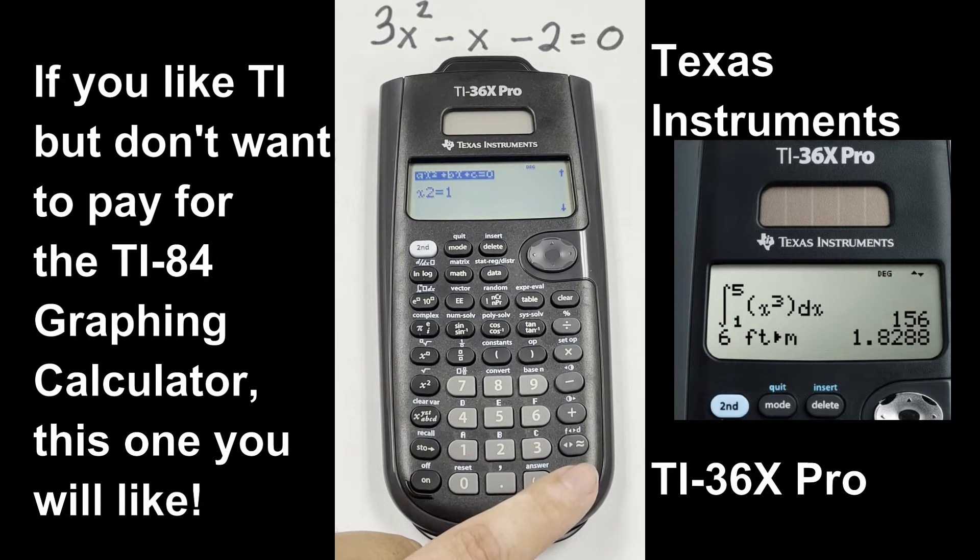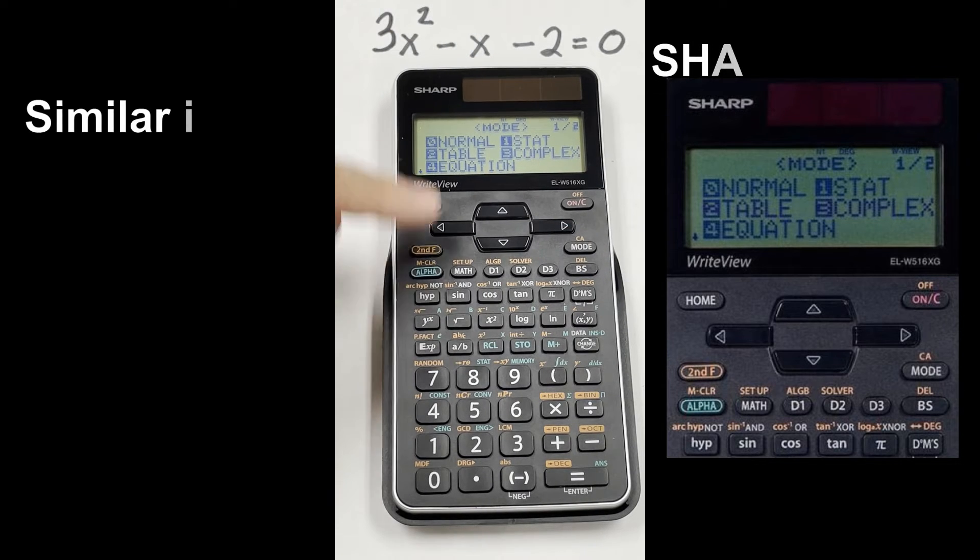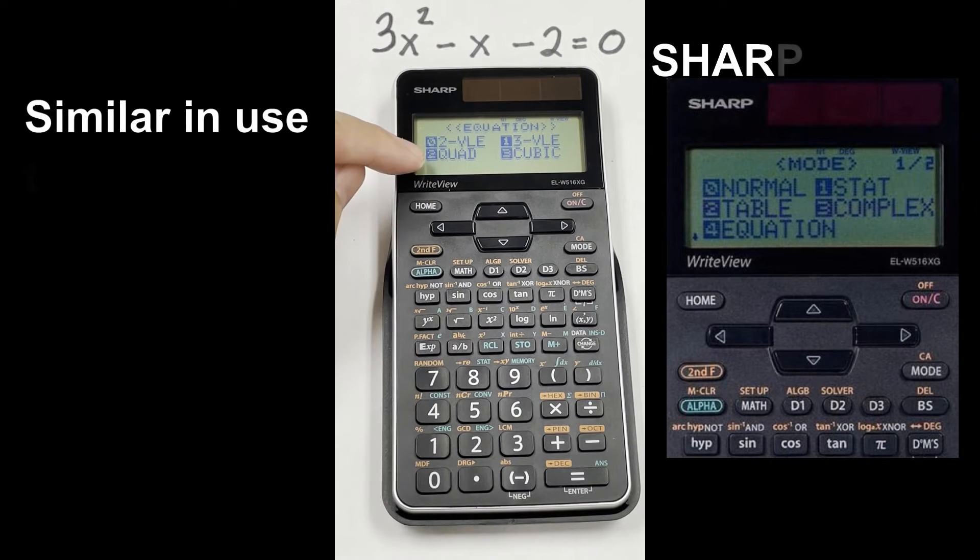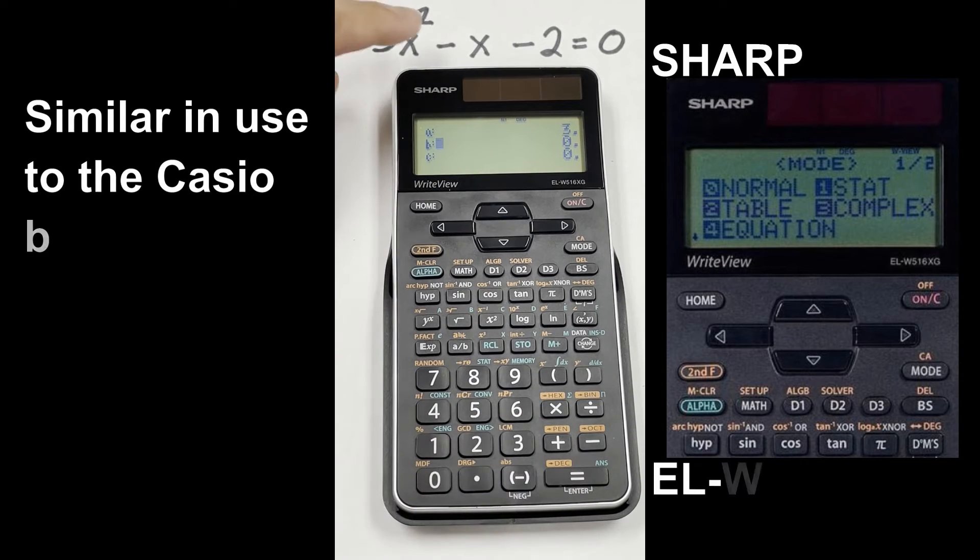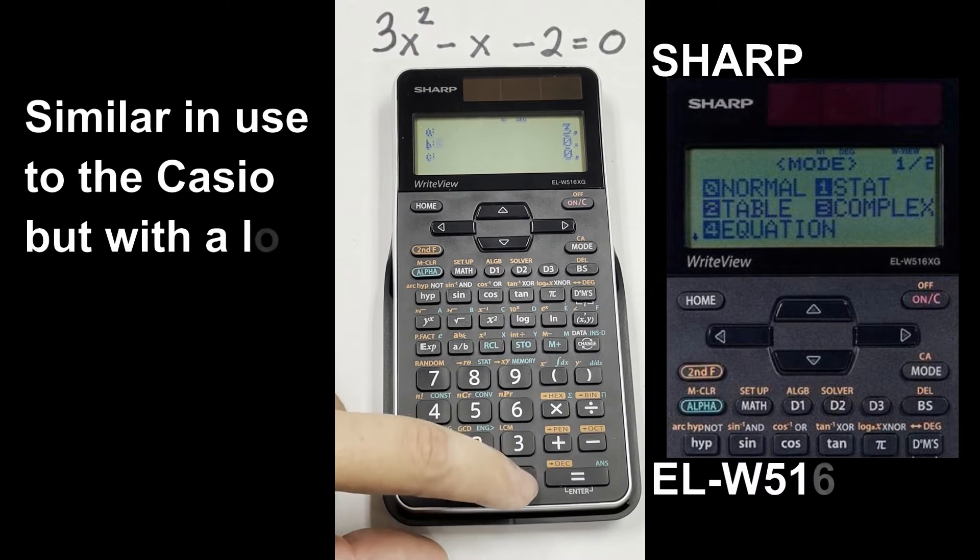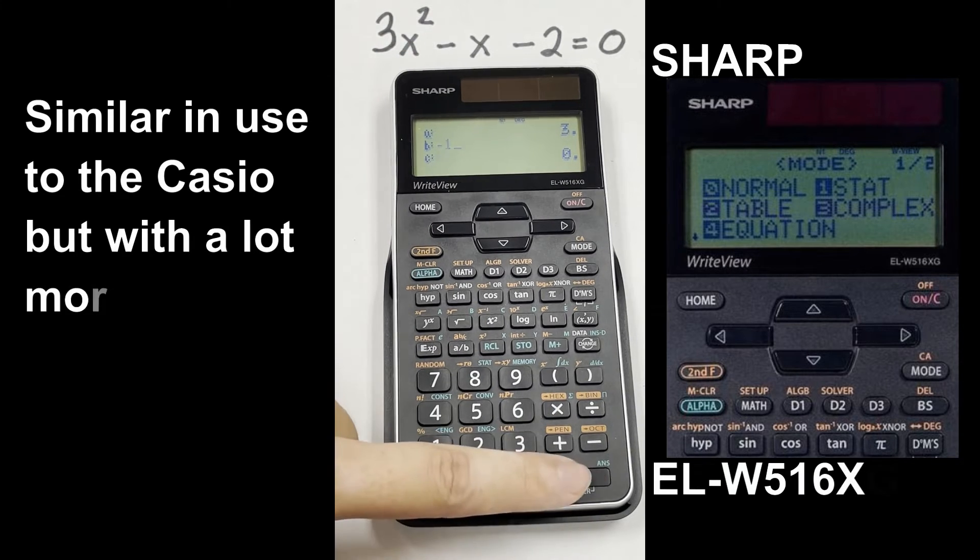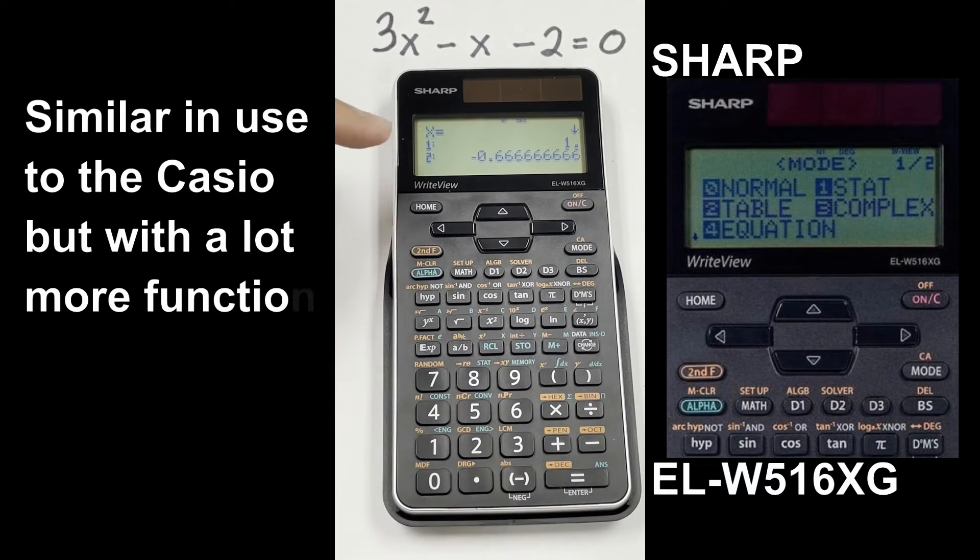Now for here, we start the same way, we're going to click mode. But equation is number 4 on the Sharp, and quadratic is number 2. Then we sub in our A, which is 3. Our B is negative 1, but we need to use this negative symbol, not the subtraction, on the Sharp, so negative 1. And the same with C, negative 2. And there it gives you our two solutions, 1 and negative 2 thirds.